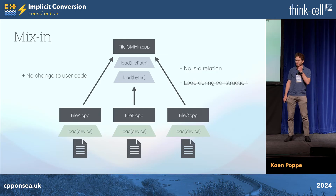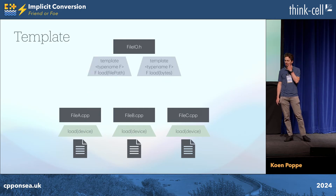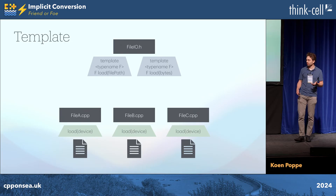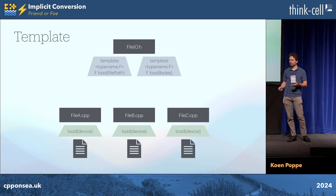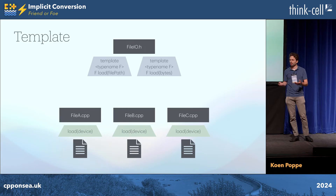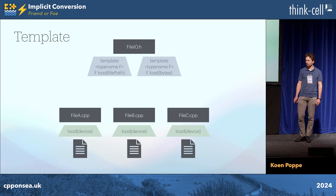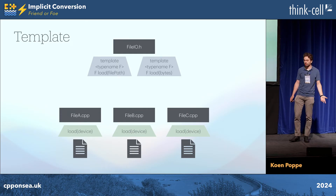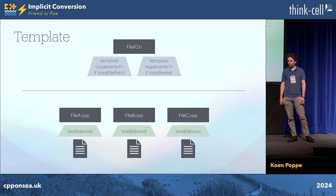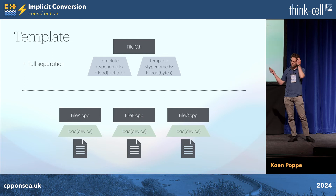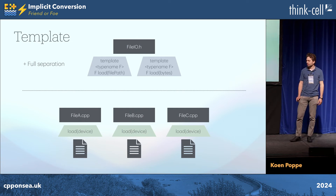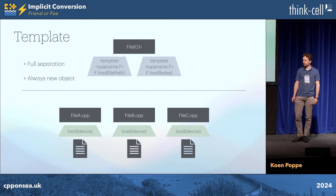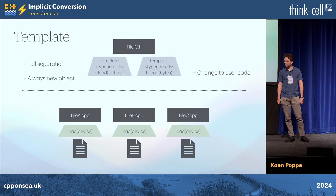An alternative approach might be to use templates, realizing that this helper function and this boilerplate code is just independent of all the rest. You can just create a template function which does the necessary things to open the file and then call the relevant load methods for the file you're trying to read. This creates a really nice isolation and separation. You can add more methods without any issues, but it would require quite significant refactoring in our code — so that's something I wanted to avoid.